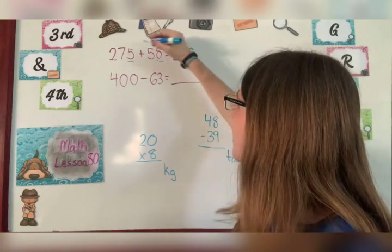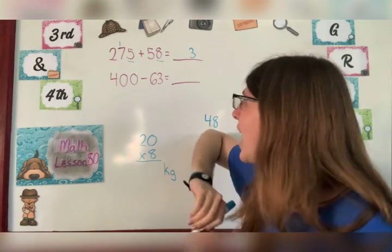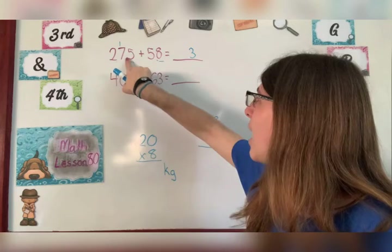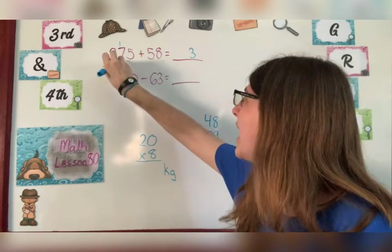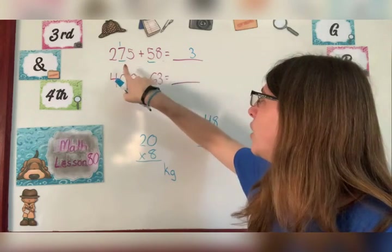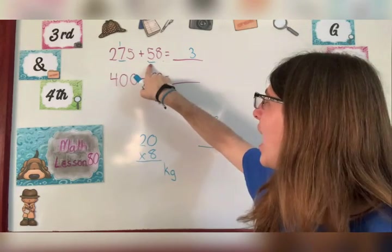Five plus eight is 13. Very good. Then you carry your one to the tens place. So now we do both numbers in the tens place. So the second place, seven and five.